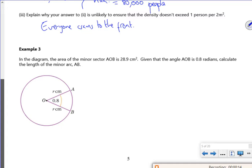The angle AOB is 0.8 radians. Calculate the length. So first of all, I need the radius. I know that for the area it's a half R squared theta.